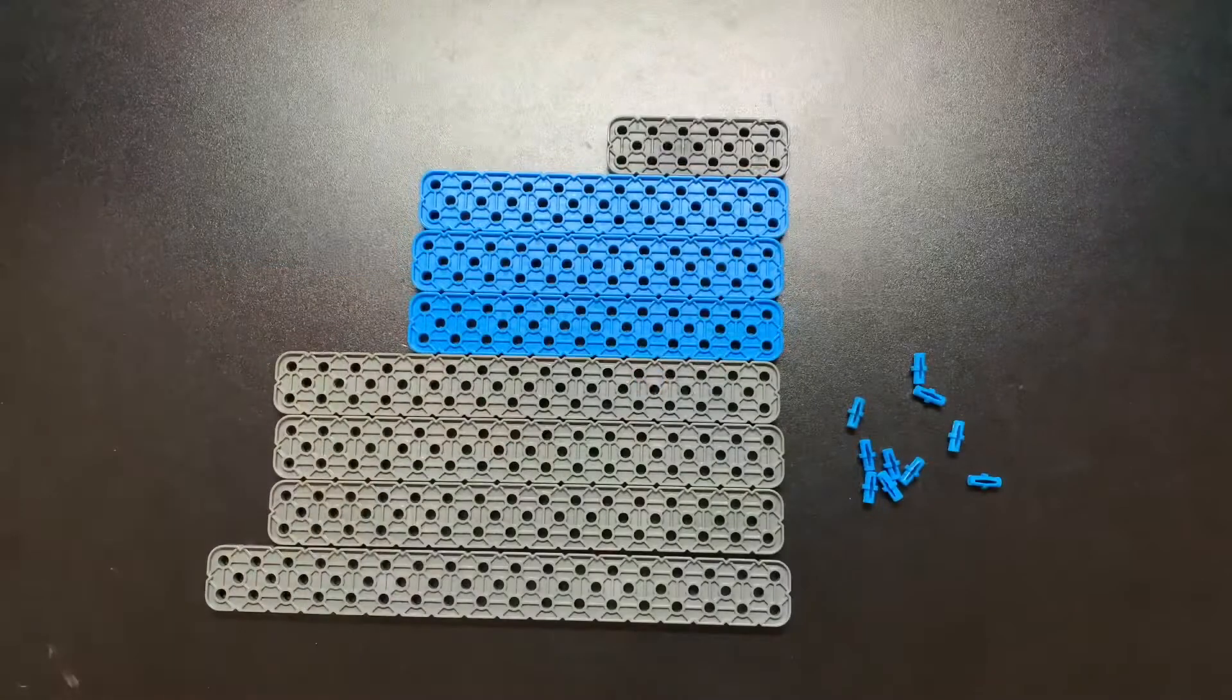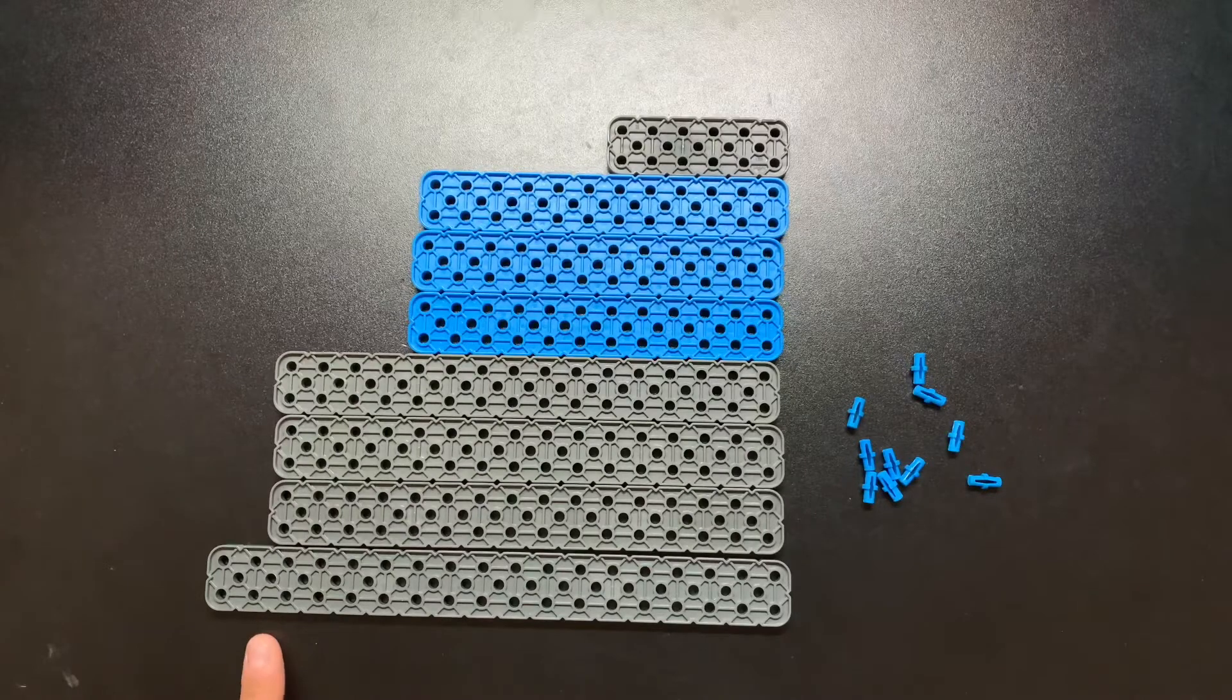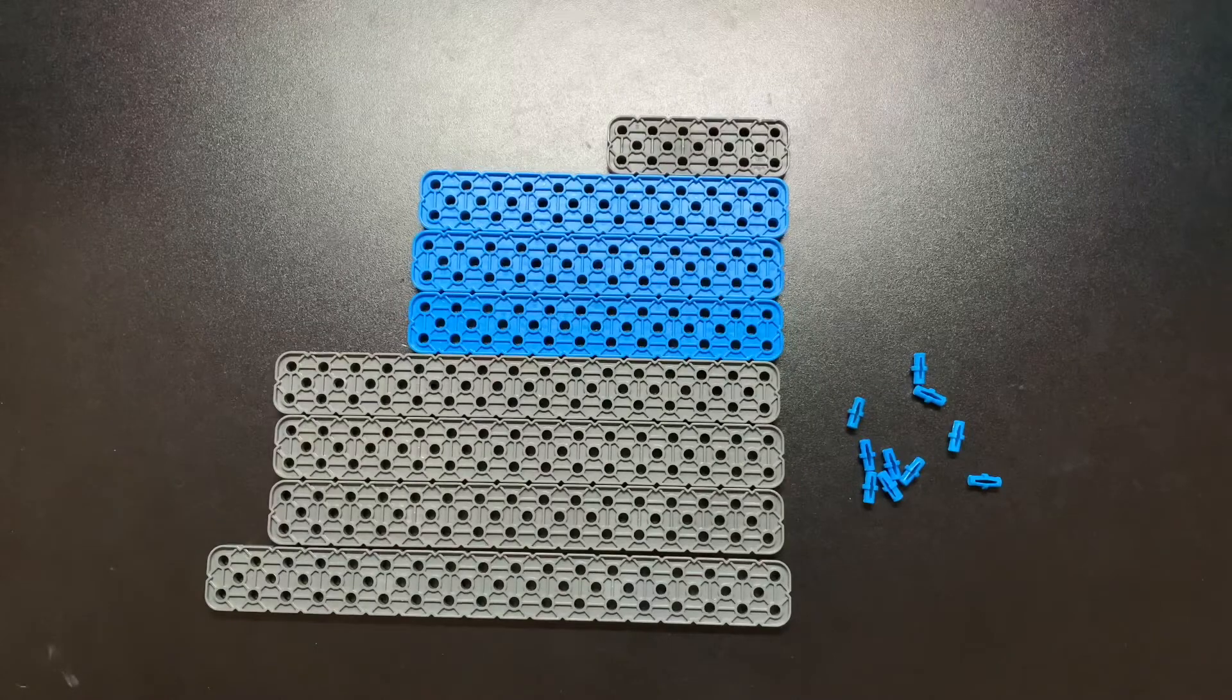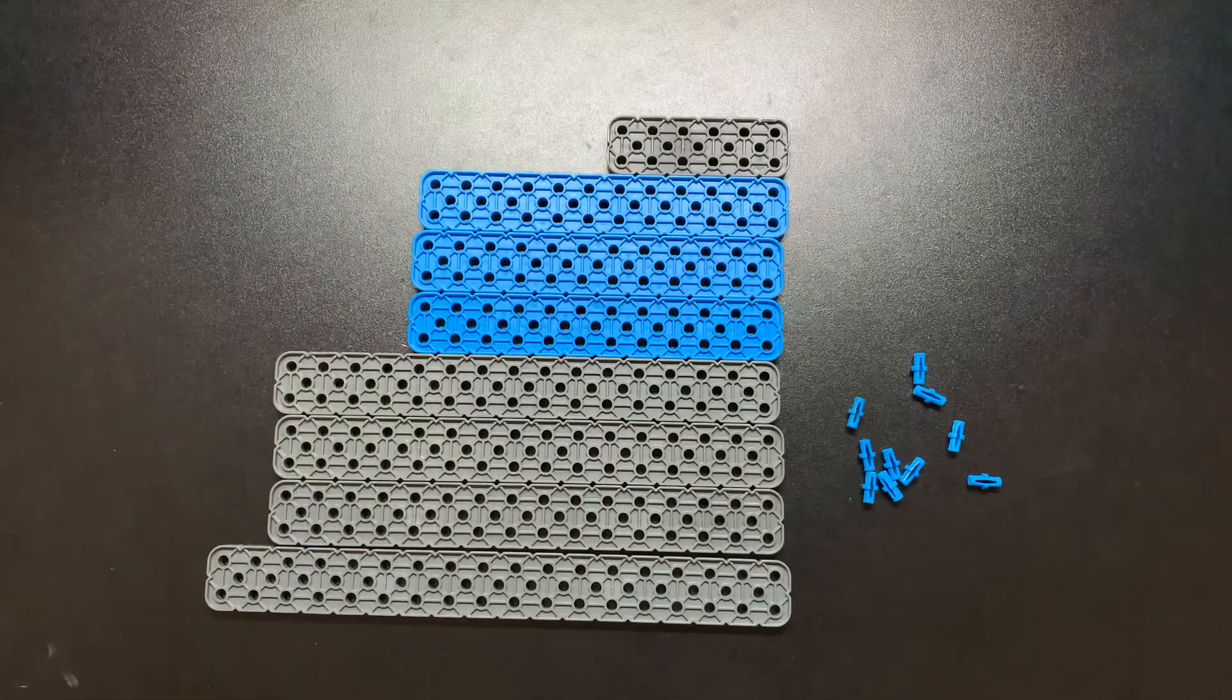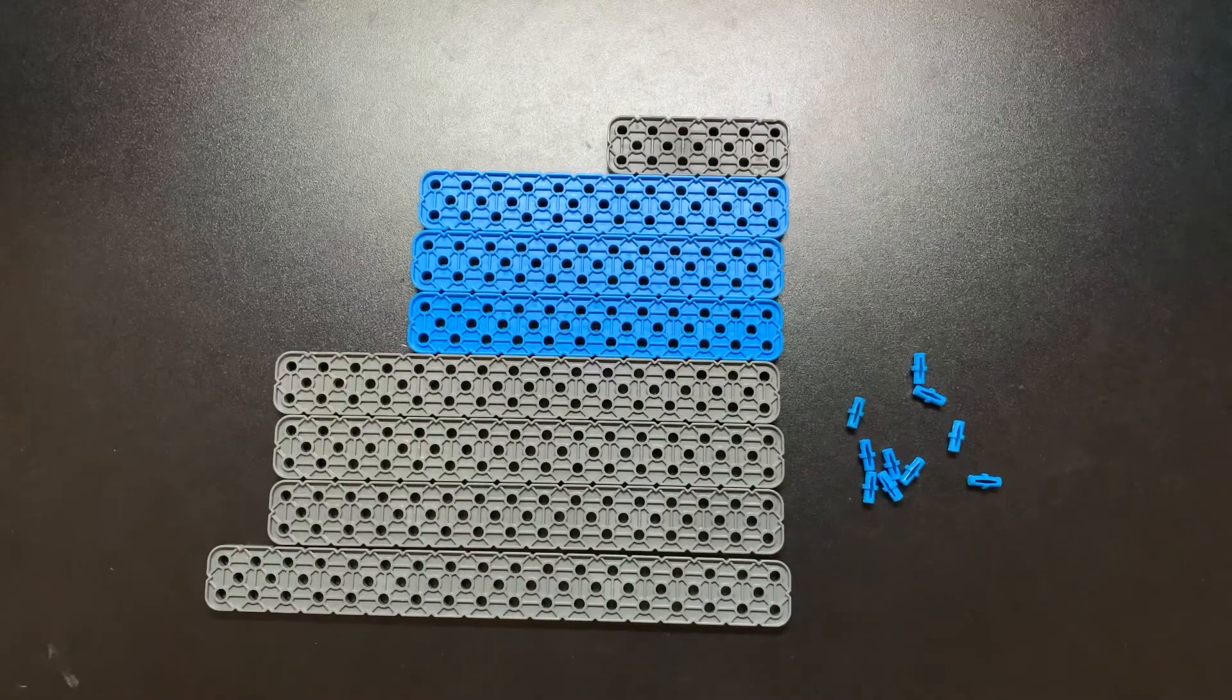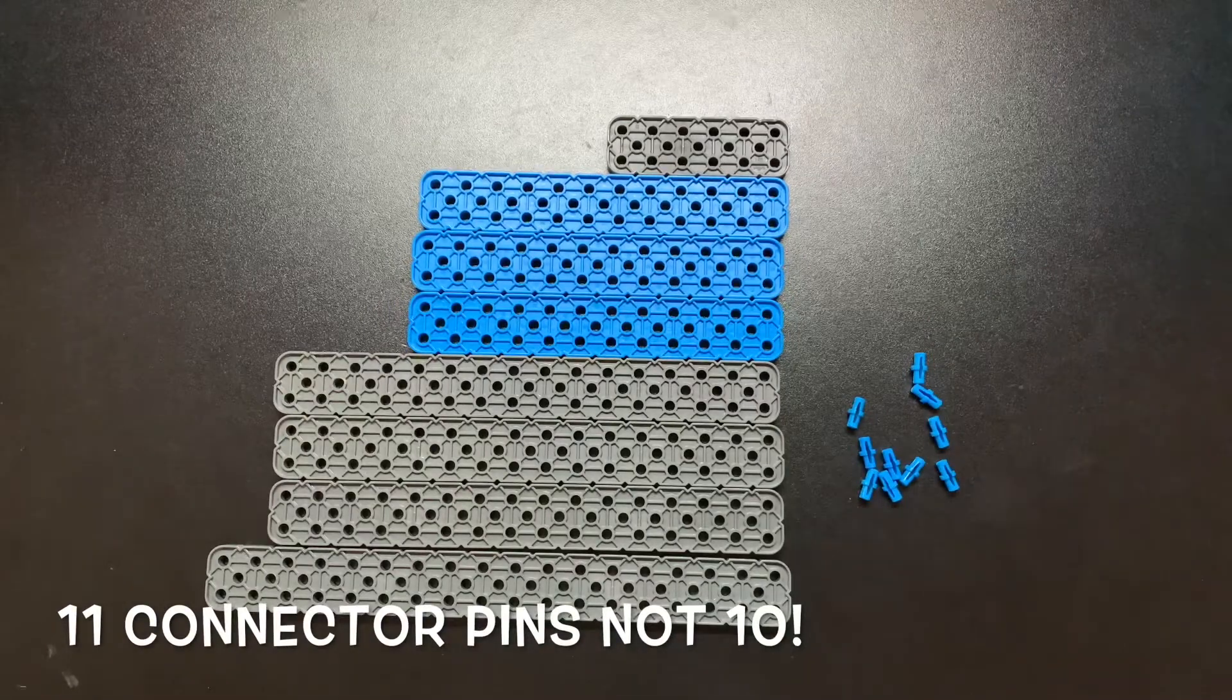Here are all the parts you will need to build a six bar lift. First you will need one 2 by 20 beam. You will need three 2 by 18 beams. You will need three 2 by 12 beams and one 2 by 6 beam, and you will also need ten connector pins.